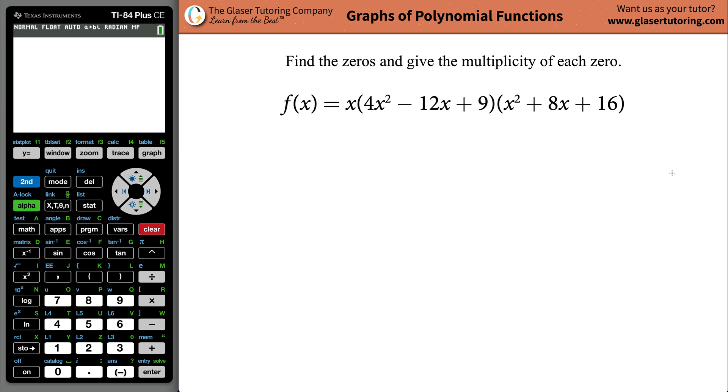Hi, Andrew here. Today I would like to teach you how to find the zeros and give the multiplicity of each zero of the following function: x times this thing and times that thing. So the first thing we have to do to find the zeros, in other words the x-intercepts, is we have to have this function in fully factored form. Now we don't have it in fully factored form. We can factor this and we can factor this. So let's start there.